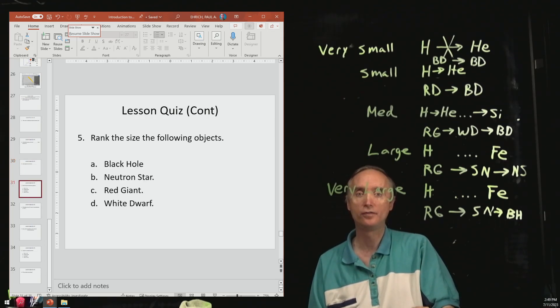Rank the size of the following objects. So which one is going to be the largest? That's going to be the red giant. Then what's the next size smaller? That's going to be the white dwarf.